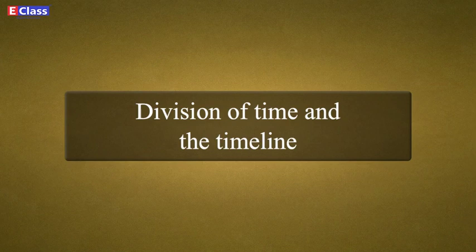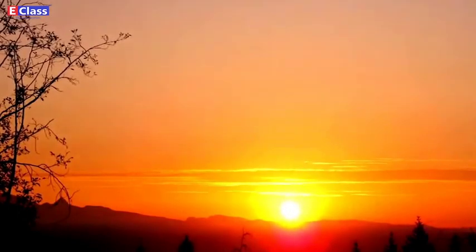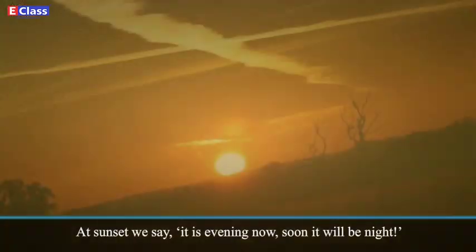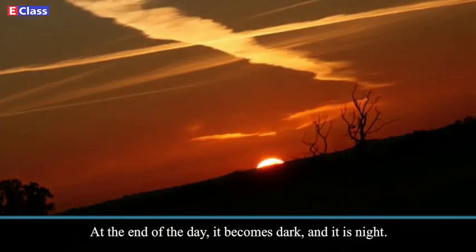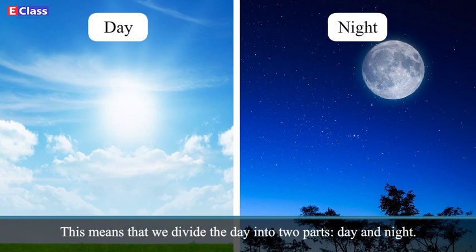Division of Time and the Timeline. There are different methods of reckoning time. Time is continuous, but for our convenience we divide it into periods. The method we use depends on our purpose for dividing it. For example, at sunrise we say it is morning and the day has begun. At sunset it is evening, and soon it will be night. We divide the day into two parts: day and night.